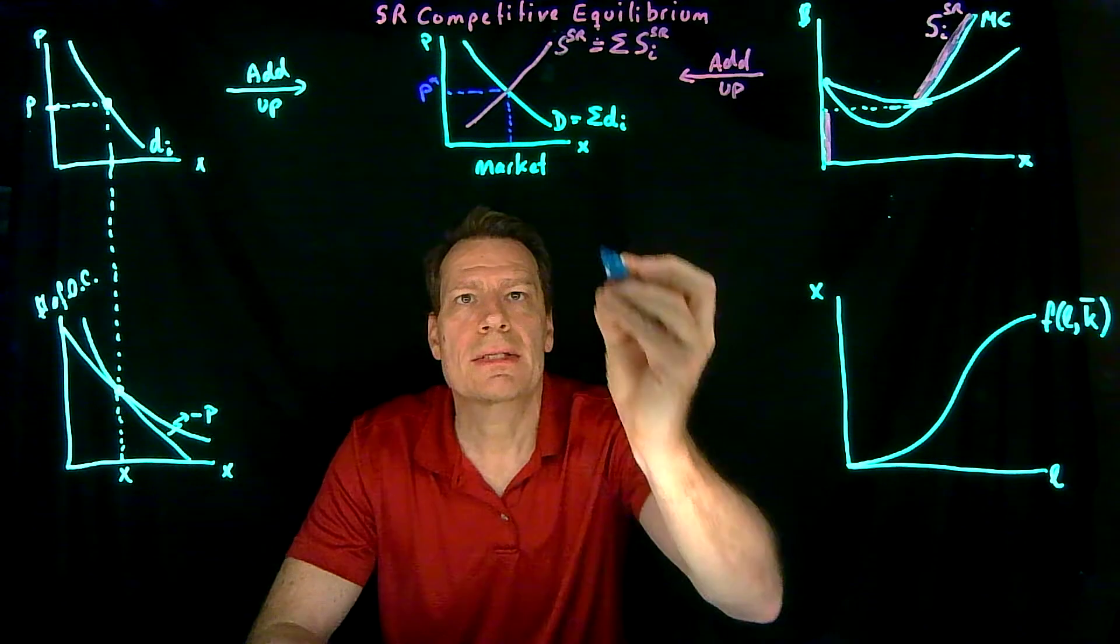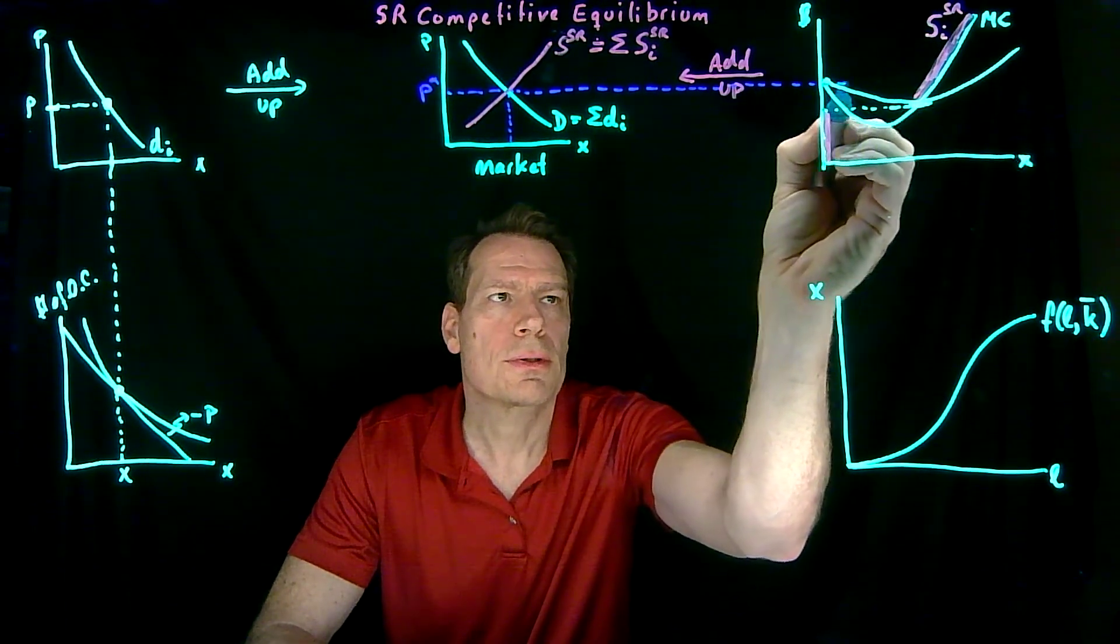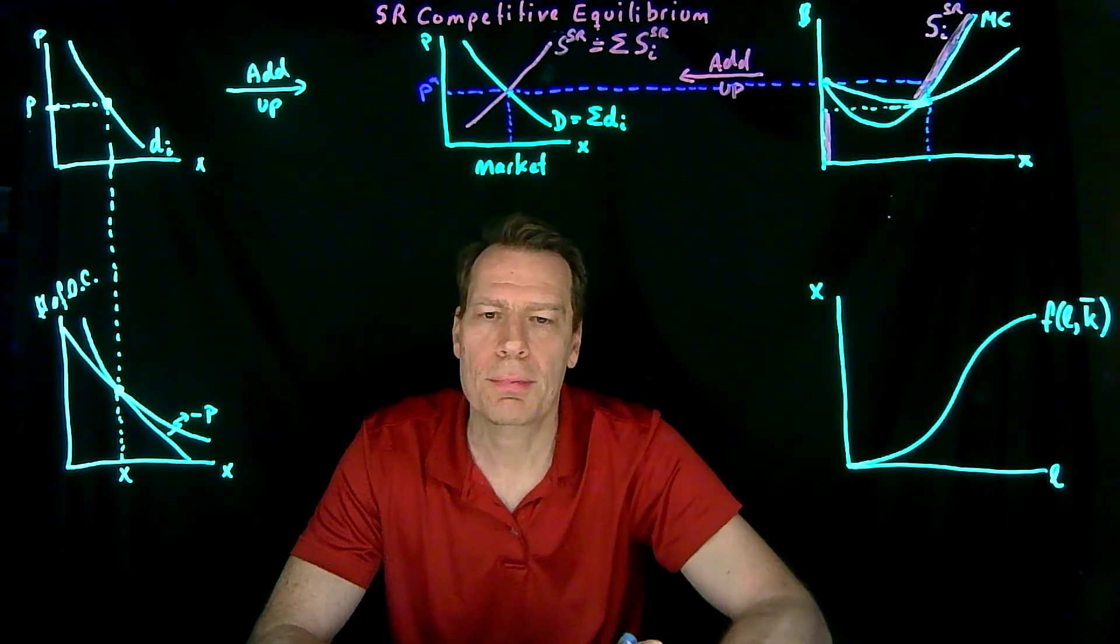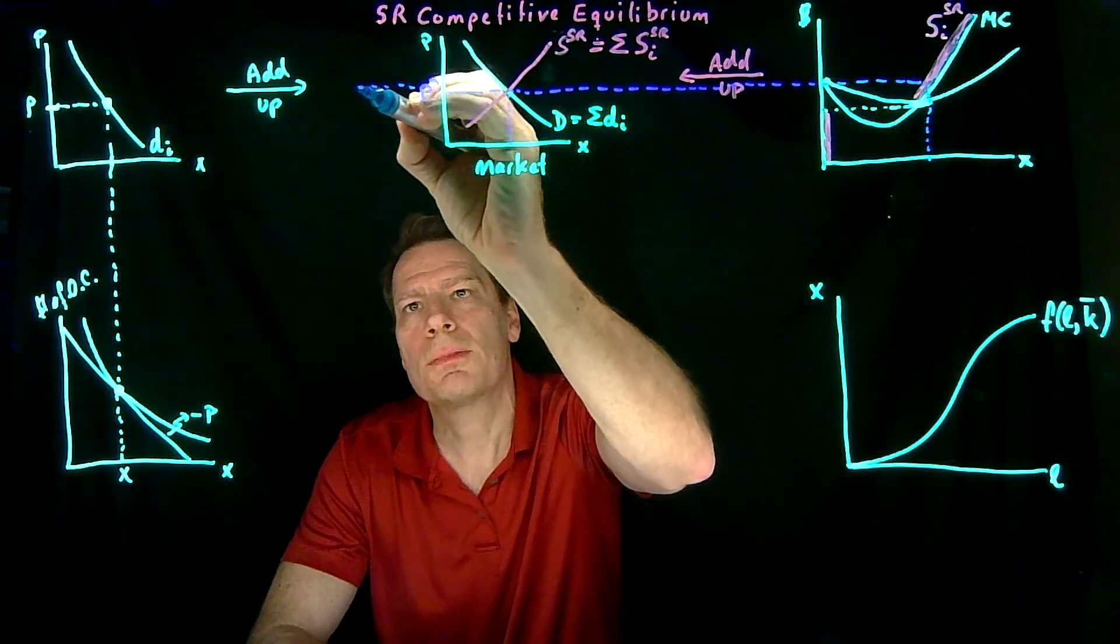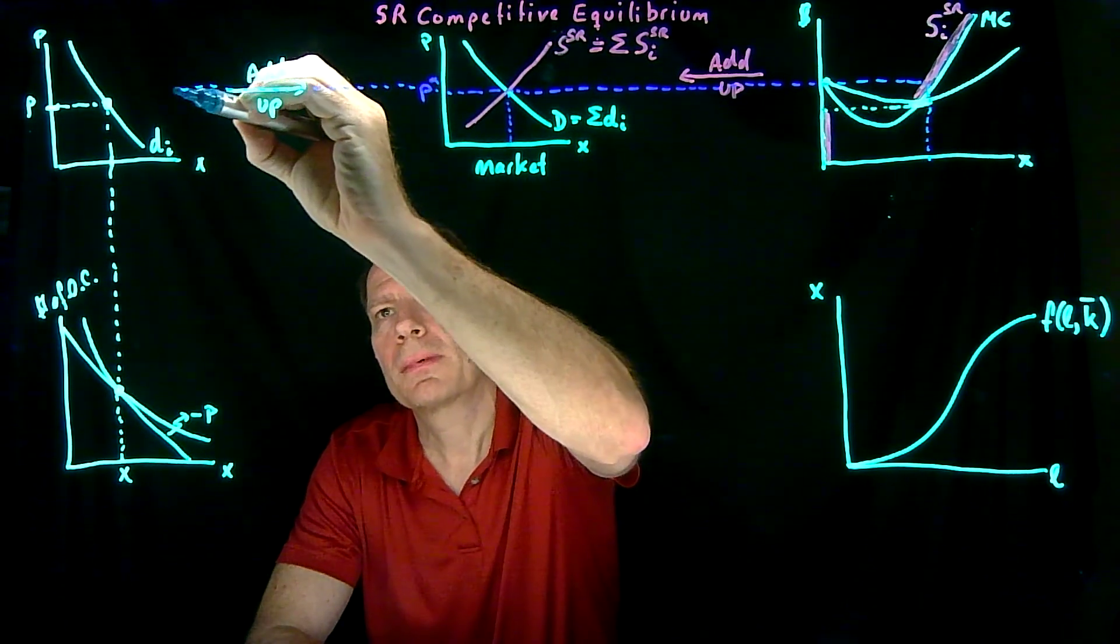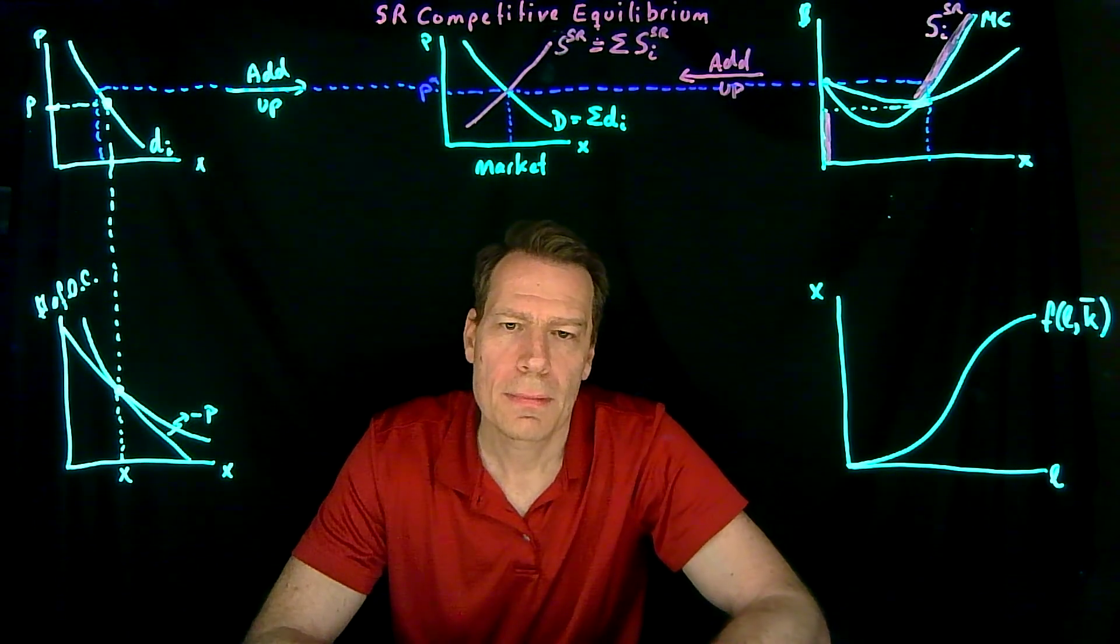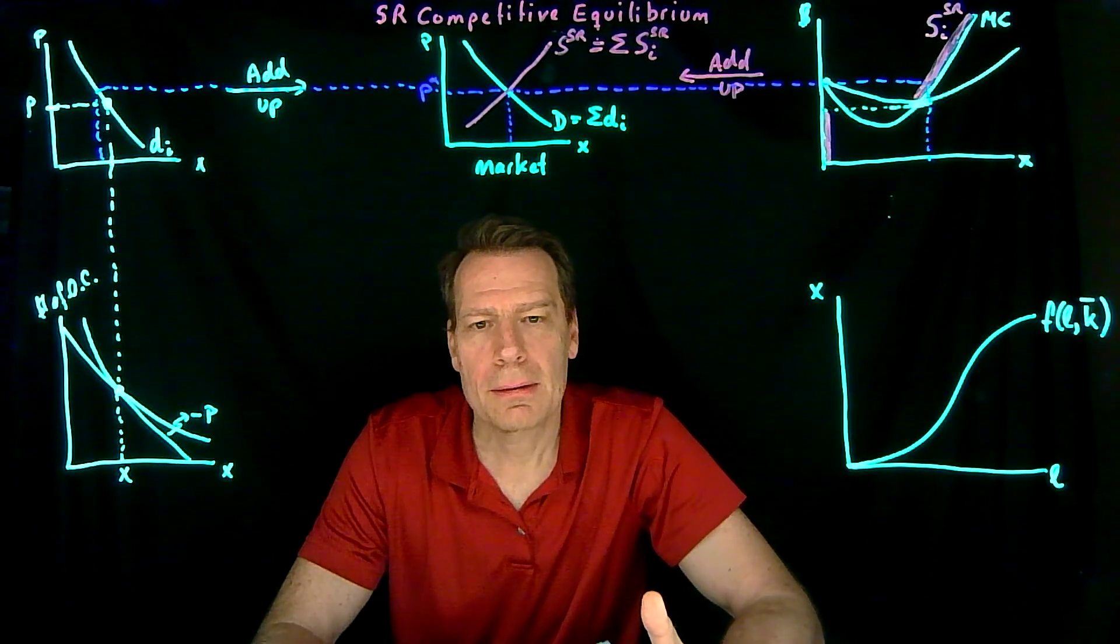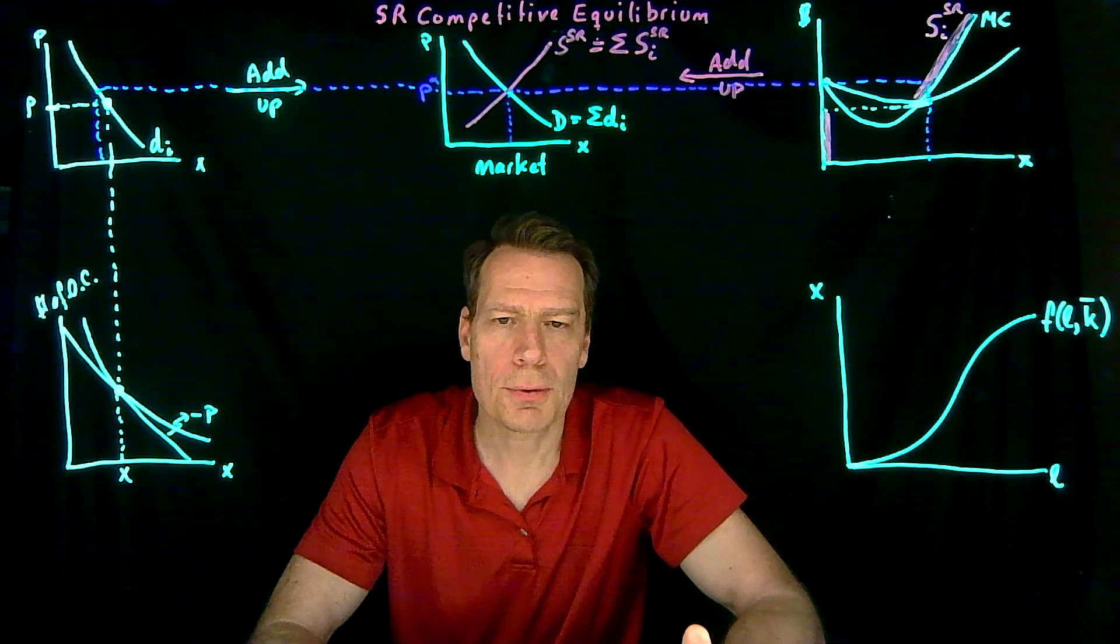And when the price reaches that equilibrium, a price signal is sent to producers that tells them how much to produce at that price. And that same signal is sent to consumers to tell them how much to consume along their demand curves. And at the equilibrium, the quantity that's demanded by all the consumers will be equal to the quantity that's supplied by all of the producers.